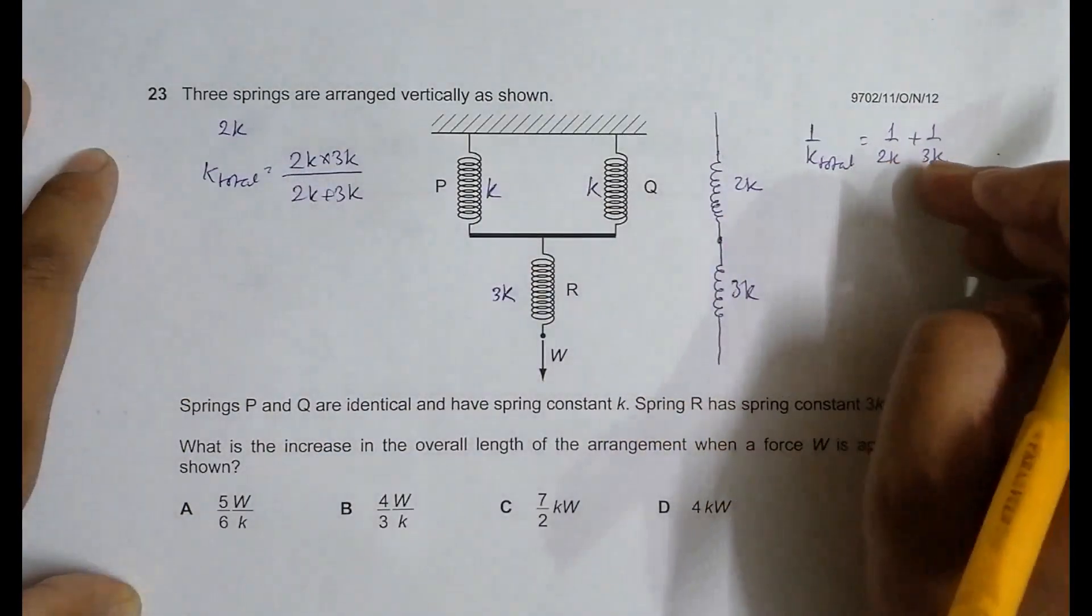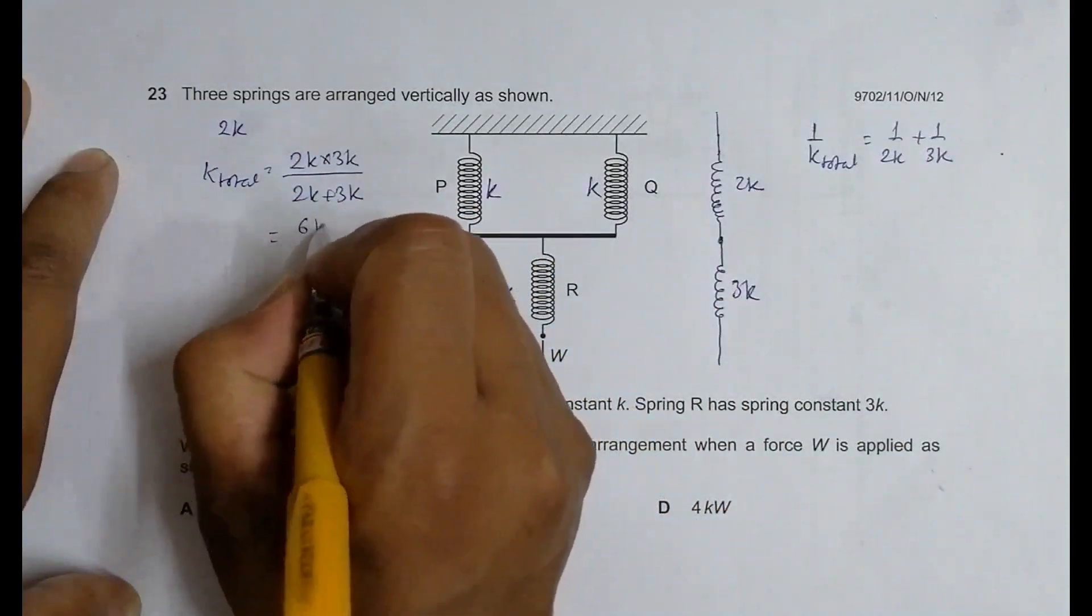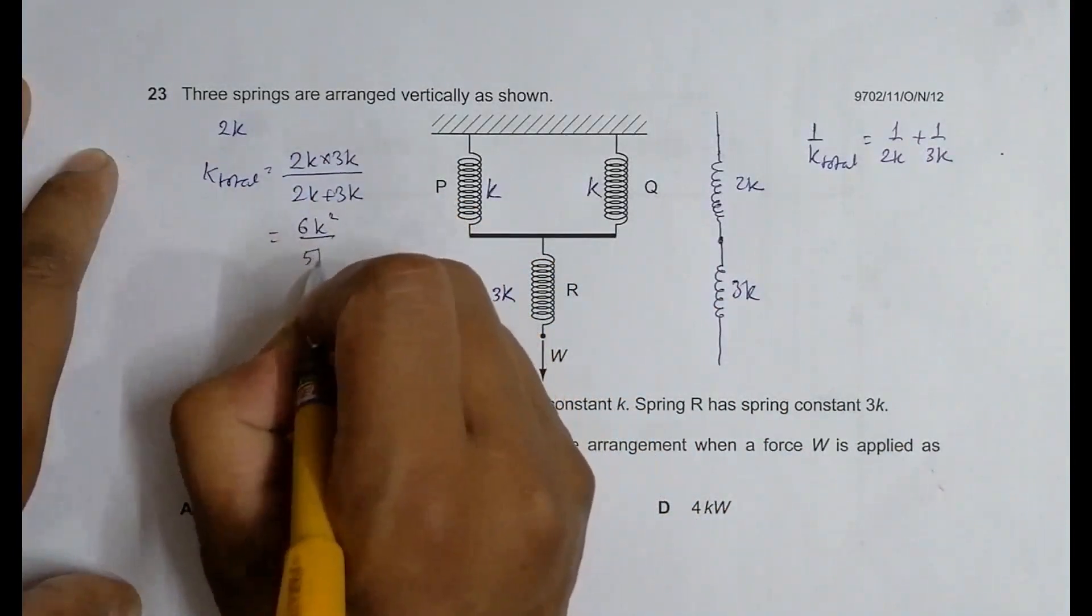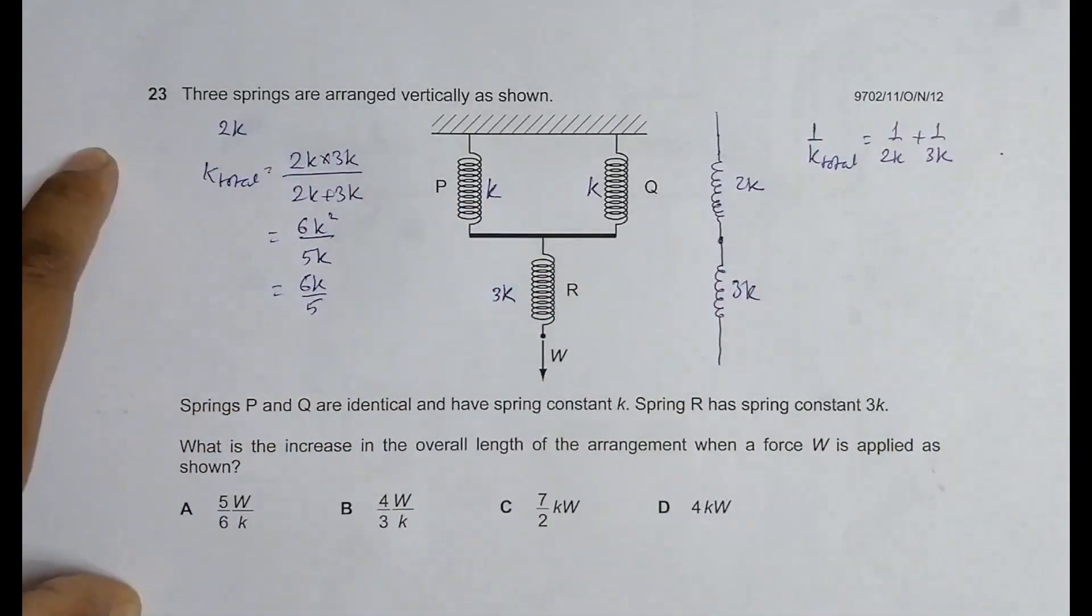So if I take the LCM and then take it reciprocal then I get this. So it is 6K square by 5K which gives us 6K by 5. So this is the K total.